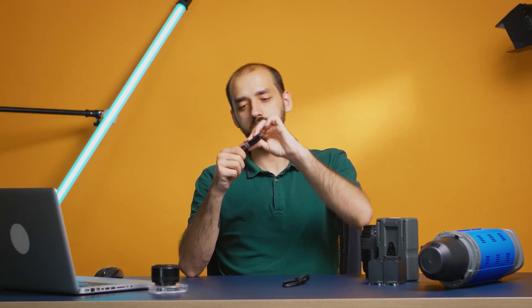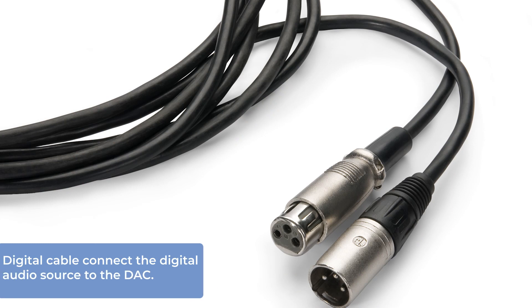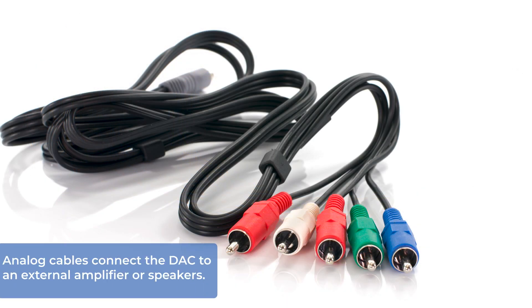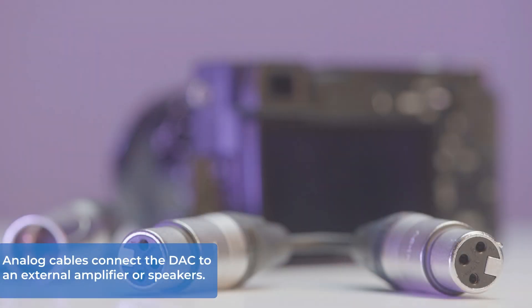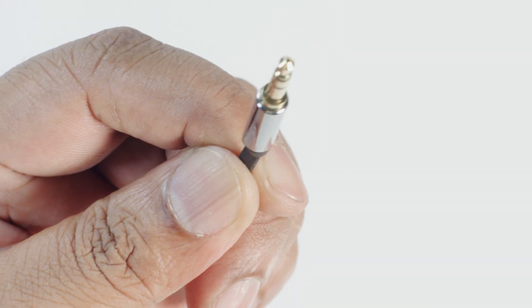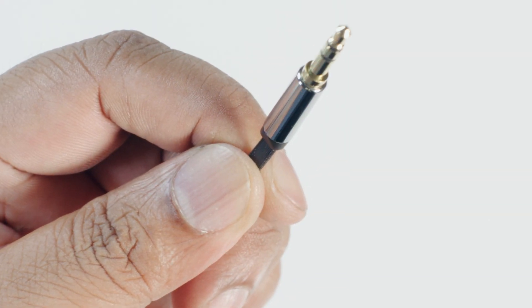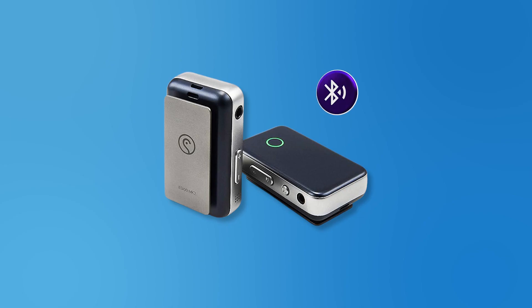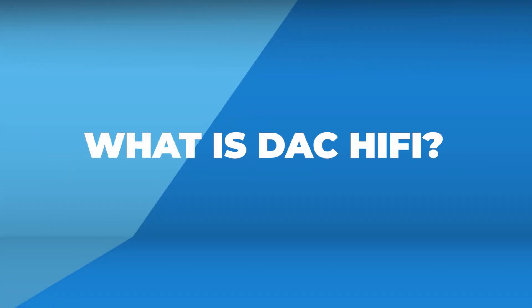What are DAC cables? They're a crucial link in the chain. Digital audio cables like coaxial, USB, and optical connect sources to the DAC. Analog audio cables like RCA and XLR join DACs with amplifiers or speakers. If you're using a DAC/amp combo, headphone cables come into play as well. Remember, not all DACs need cables — some connect wirelessly via Bluetooth.